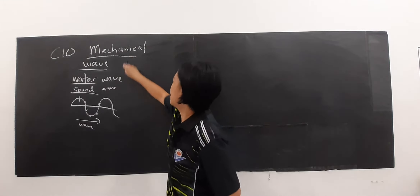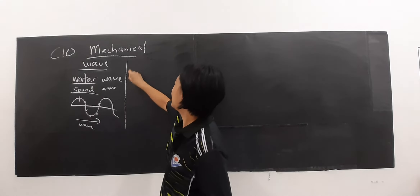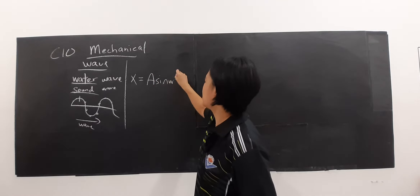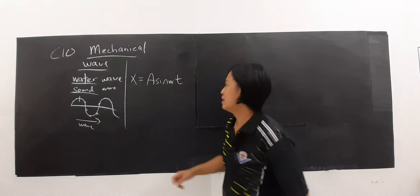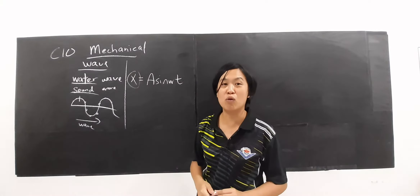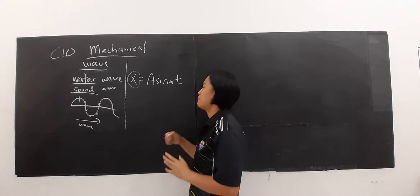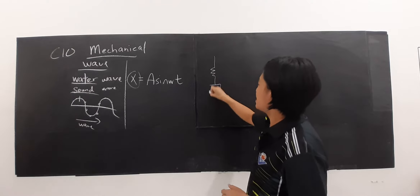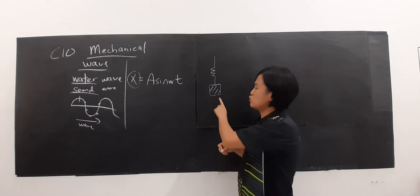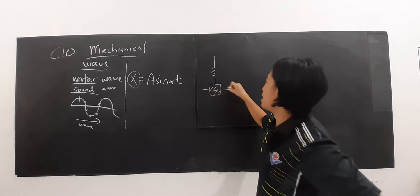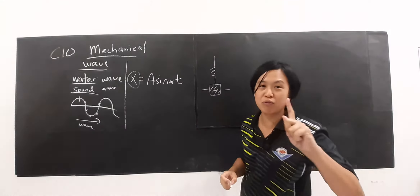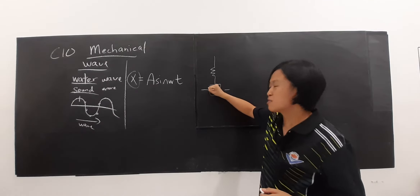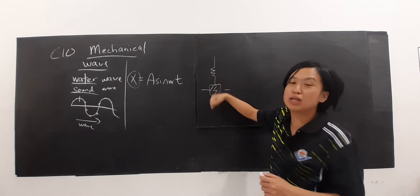What is the equation for simple harmonic motion that you learned? The most important equation will be x equals to A sine omega t. This stands for displacement for the particle. In simple harmonic motion, for example, a mass attached to a spring oscillates — this involves only one object or one particle oscillating.